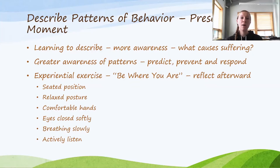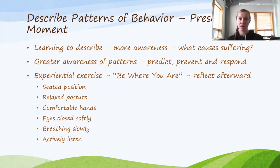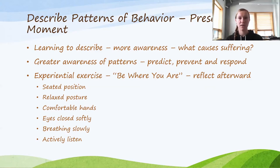As we become more aware of those patterns and are able to describe them in objective terms, it becomes easier over time to predict when those patterns might happen, take action before the fact to prevent them — antecedent strategies — and then also respond in the moment when we catch ourselves engaging or not engaging in behaviors that are in alignment with our desire to remain in the present moment.